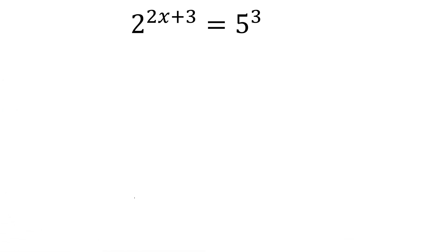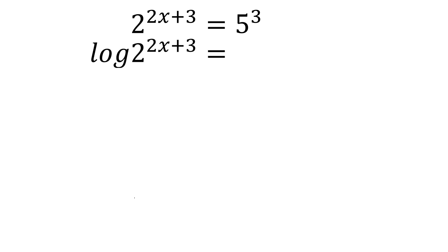Now one more example. What if the bases are totally different? Like 2 to the power of 2x plus 3 equals 5 to the power of 3. There's no way for us to change the base to be the same — 5 cubed cannot be changed into 2 to the power of something. So how do we solve this? If a number cannot be transformed into the same base as the other side, then you have to use the logarithm. We're going to put log on both sides: log of 2 to the power of 2x plus 3, and on the other side log of 5 to the power of 3. The base of this logarithm is 10 if no base is written.